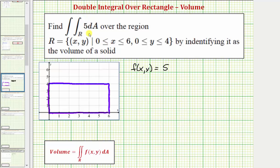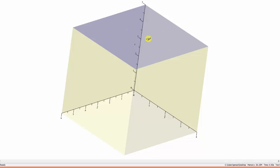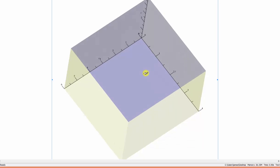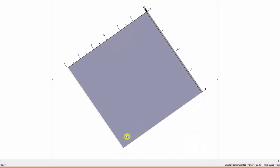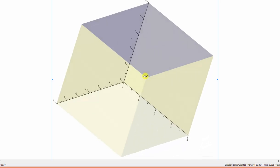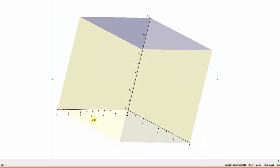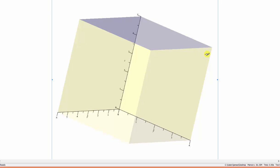Looking at this graphically, f of x comma y equals five is graphed here in blue. If we look down on the xy plane, notice how we have our rectangular region of integration. Our solid is this cuboid or right rectangular prism and therefore we can find the volume using a geometric formula.